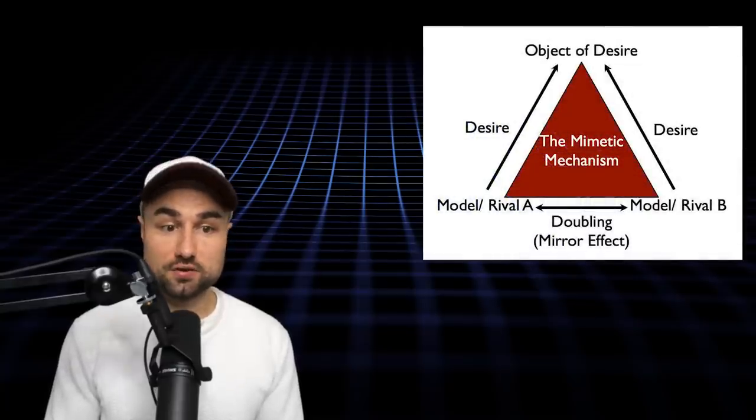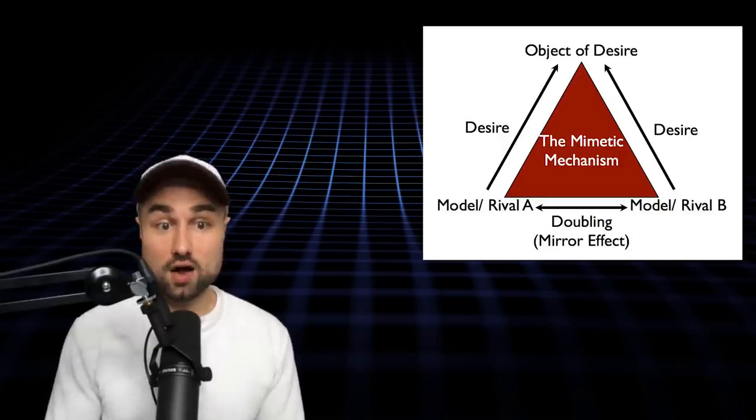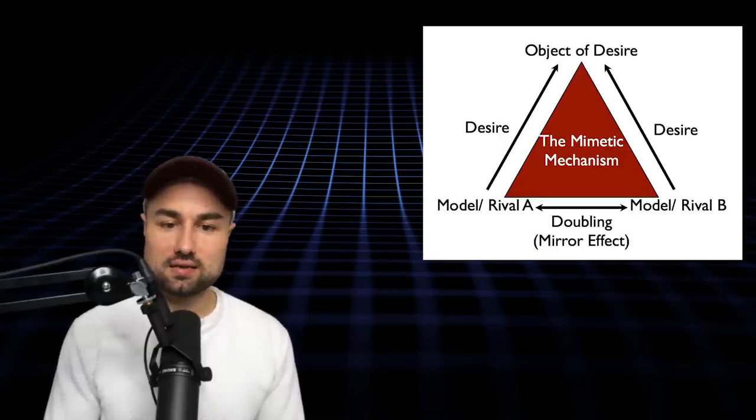For example, let's take a deeper dive on this. Let's say that there is an object which a person desires. A second person sees the first person's desire and imitates it. Now the two are in conflict for that object. The conflict escalates when the two subjects begin to model each other in an ever-intensifying desire. This is called doubling.